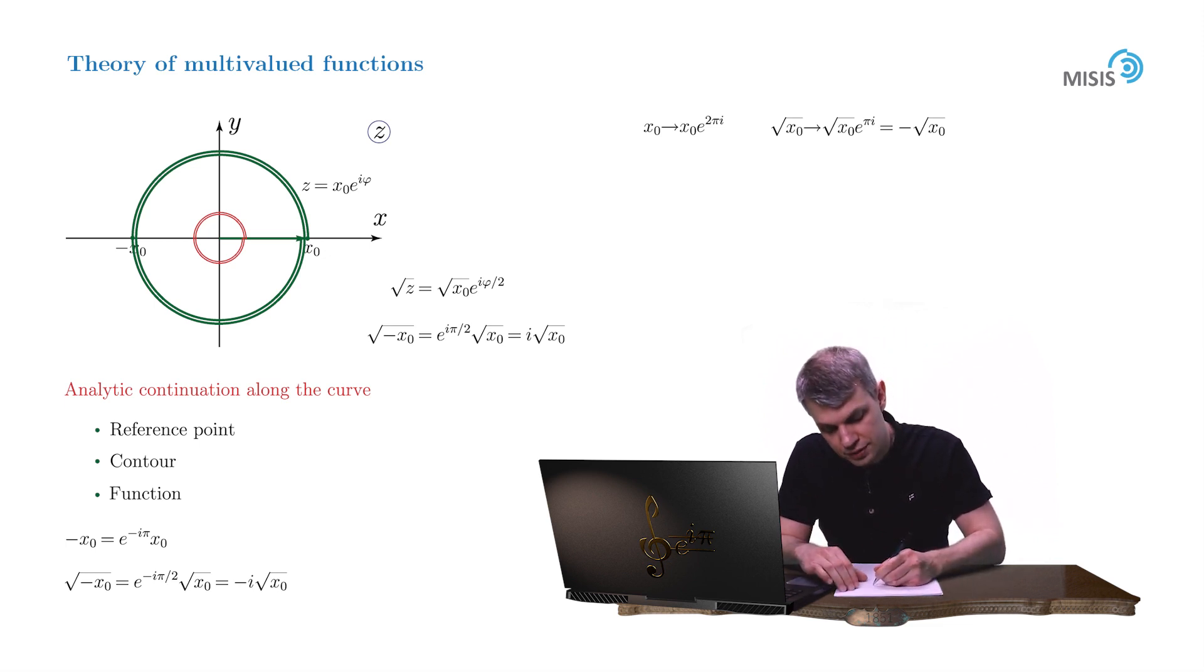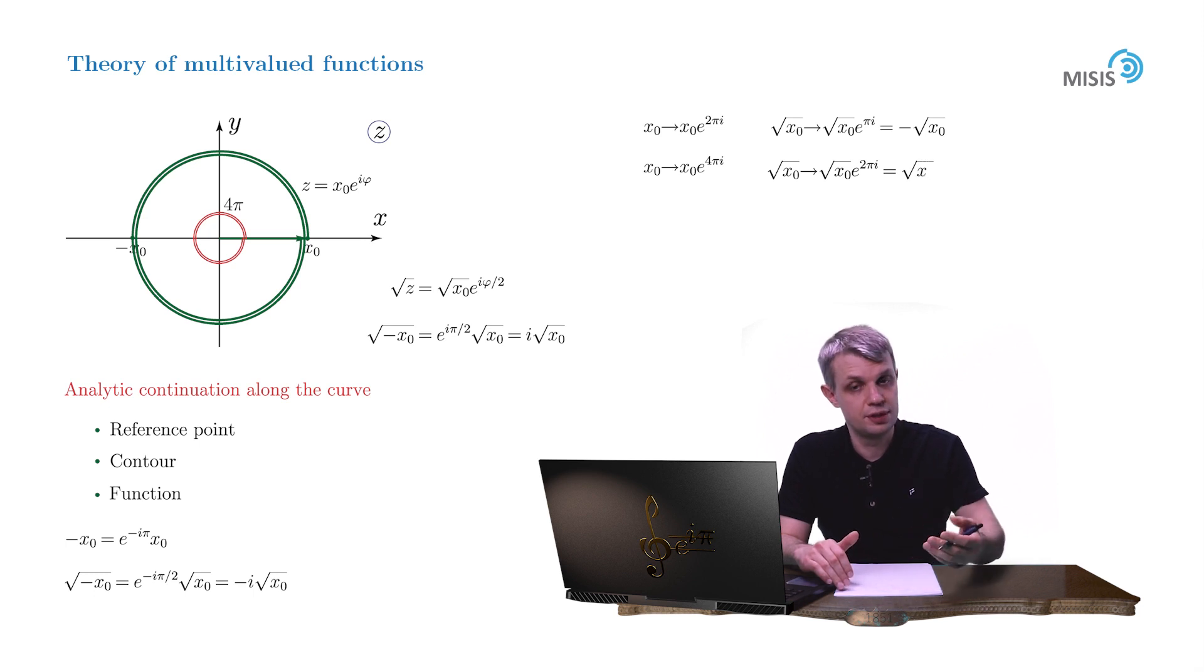But after the second rotation, the total change of the argument of our x₀ number will be 4π. So it will become x₀ times e^(4πi). And the square root will become the square root of x₀ times e^(2πi), so it returns to its original value.